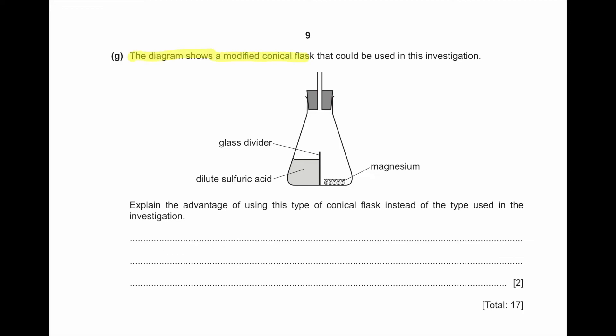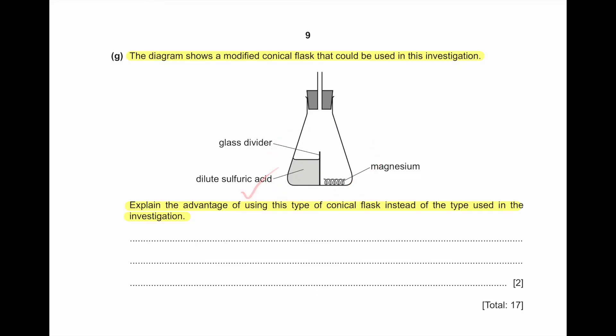Part G: The diagram shows a modified conical flask. The advantage of using this type of conical flask is that it has a glass divider with the magnesium on one side and the sulfuric acid on the other, so you can simply tip the vessel to start the reaction, meaning no gas escapes when adding the reactant.